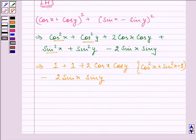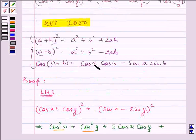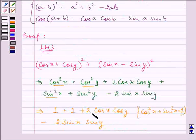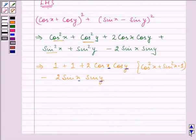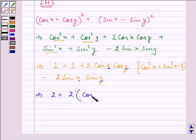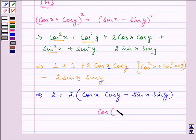Further, by using the identity we discussed in our key idea: if we have cos a cos b - sin a sin b, we can write it as cos(a + b). If we carefully analyze what we have here, we have cos x cos y - sin x sin y, so taking 2 common, this can be written as cos(x + y).